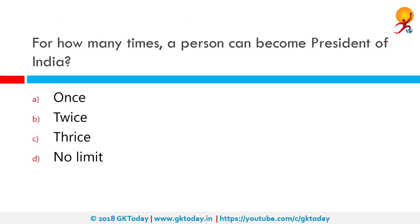For how many times can a person become the President of India? The correct answer is there is no limit. As per Article 57, a person who holds or who has held office as President, subject to all other provisions of the Constitution, is eligible for re-election to the office.